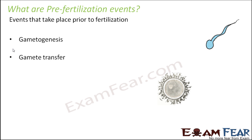The events categorized under pre-fertilization events are: one, gametogenesis, and the other is gamete transfer. For fertilization to take place you need the gametes, since fertilization is the fusion of gametes. So the gametes need to be formed — that is why gametogenesis is a key pre-fertilization event.